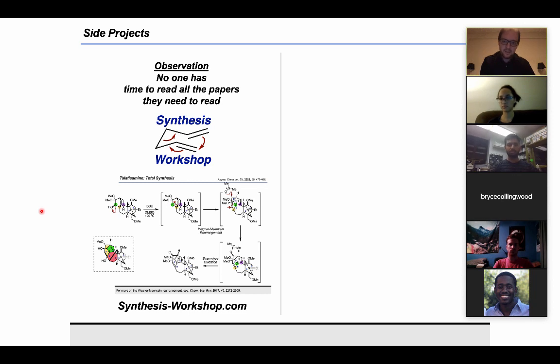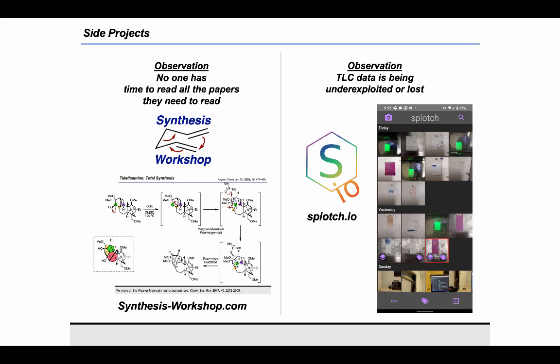which is focused on advances in synthetic organic chemistry, and hopefully eventually arriving at a point where chemists can present their own work in open access videos. The second side project I've been working on is based on the observation that one of the most important pieces of data for chemists, which is thin layer chromatography data, is often being underexploited or just simply lost in the process of publication. And to deal with that issue, I've been focusing on working with my brother to develop an app called Splotch, which is for saving and sharing and eventually annotating and publishing thin layer chromatography data.